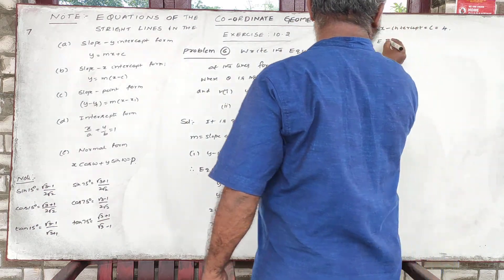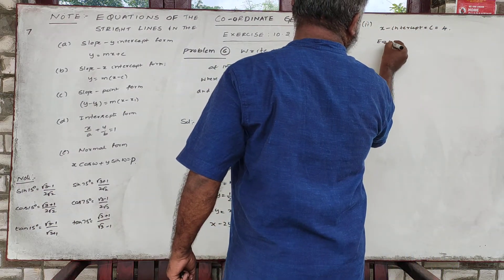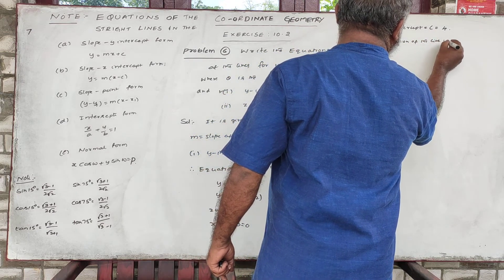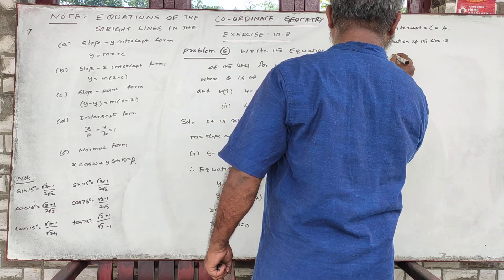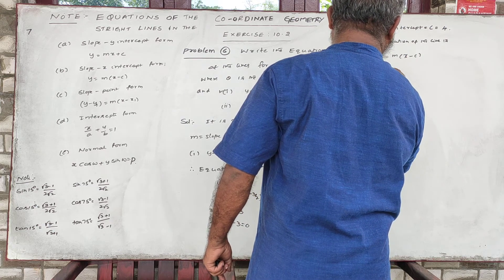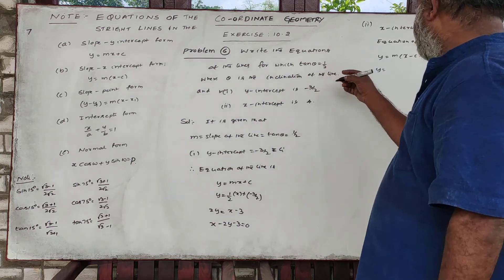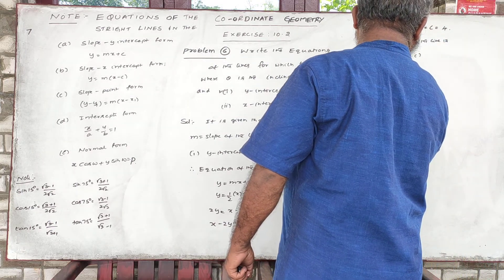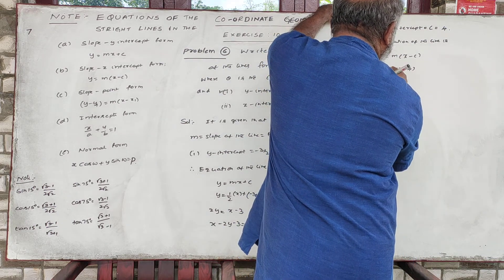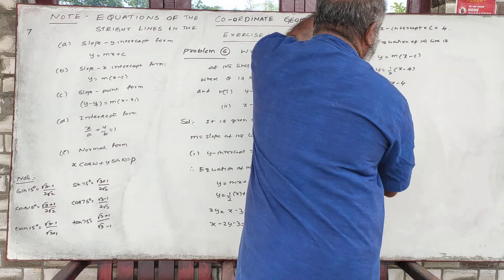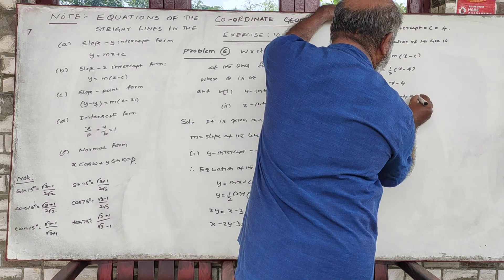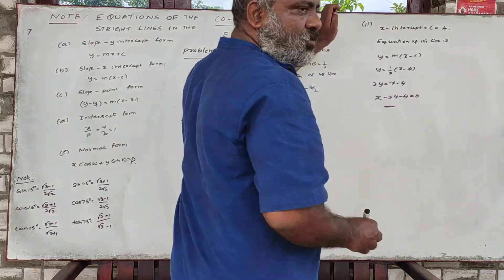The equation of the line is y equal to M into X minus C. Y is equal, M is equal to half, X minus C is equal to 4. So 2y is equal to x minus 4, giving 2y equals 0.